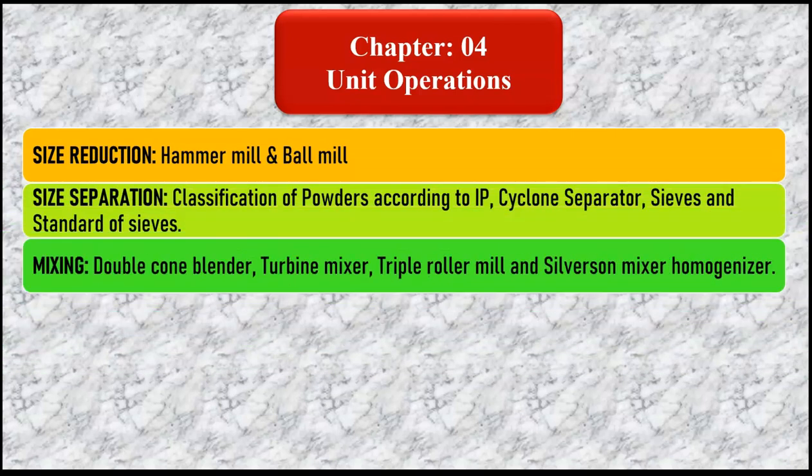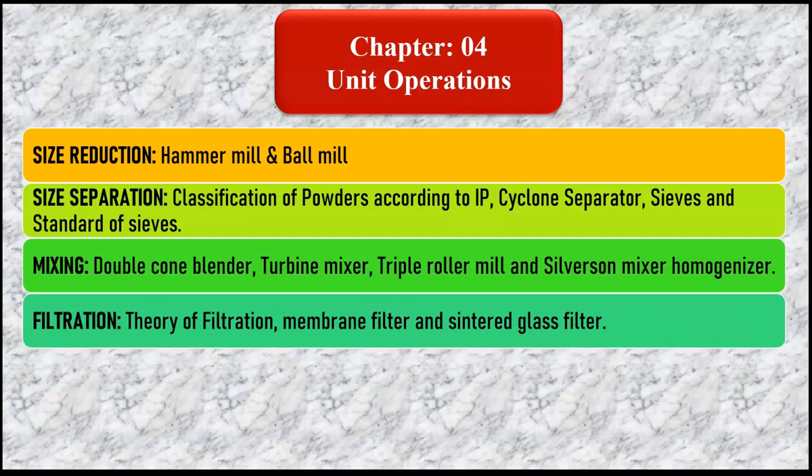Next, we are going to study mixing, in which we will cover the double cone blender, turbine mixer, triple roller mill, and Silverson mixer homogenizer. Then the next point in chapter four is filtration, covering the theory of filtration, membrane filter, and sintered glass filter.